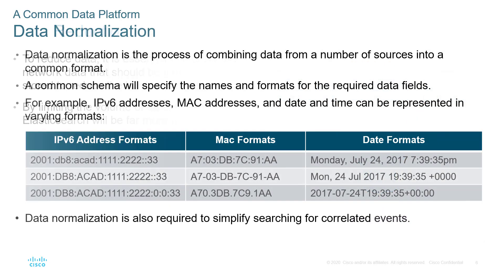All of this allows us to do data normalization. We can take our IPv6 addresses, MAC addresses, and dates and standardize them, because there are many different ways to display this content. When feeding data in from multiple locations, trying to correlate everything becomes more difficult. Data normalization is required so that we can simplify our searching for correlated events and standardize our outputs so that we have one standard format for analyzing our data.